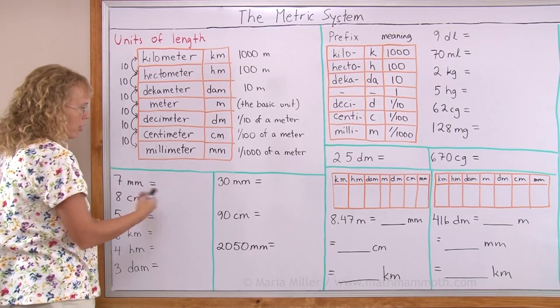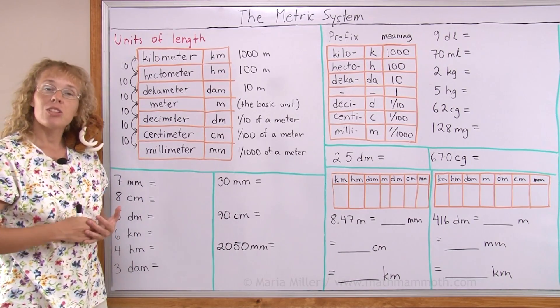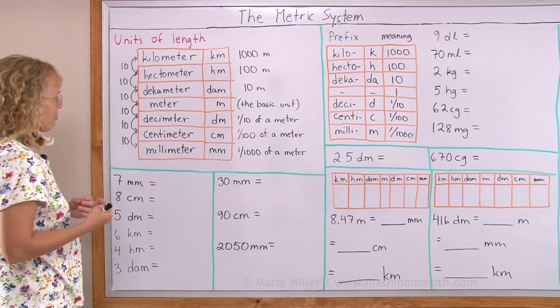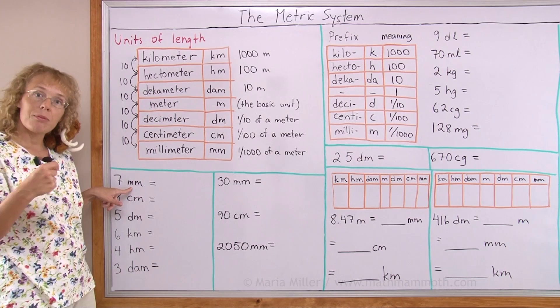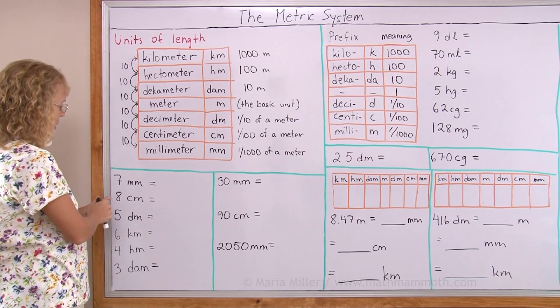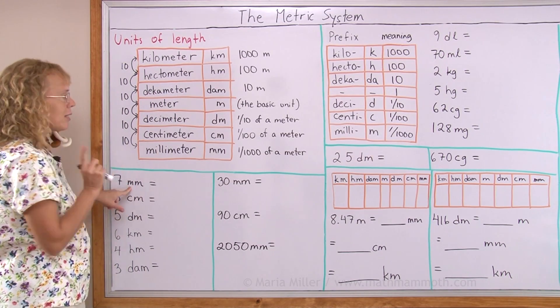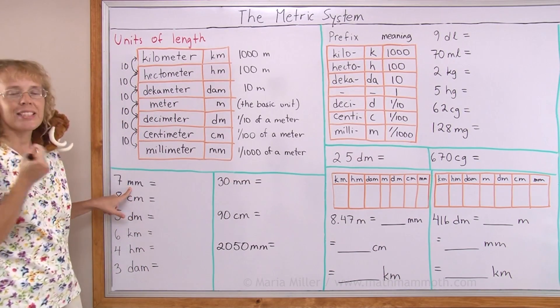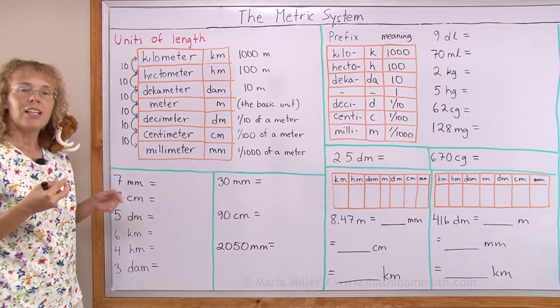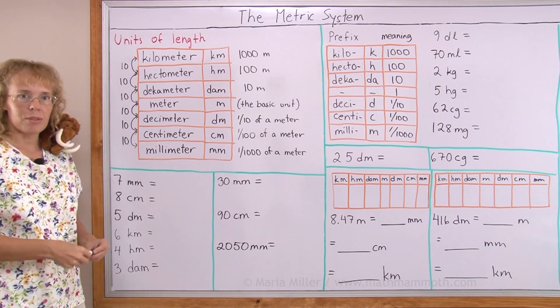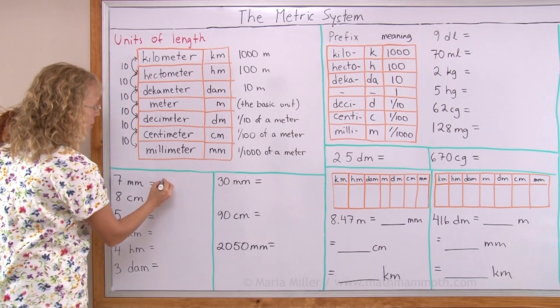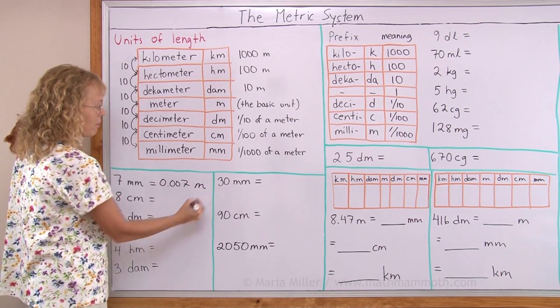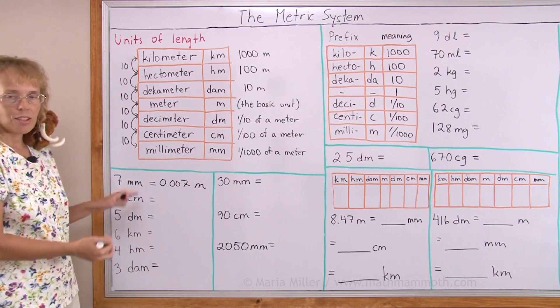Let's do some conversions. Each one of these is going to be converted into meters, to the basic unit, and for that we can basically think of this prefix here and what it means. For example, seven millimeters, milli means one-thousandth, so seven milli would mean seven-thousandths. Seven-thousandths is a decimal number, so we just write it here: 0.007 meters. That's how the conversion went.